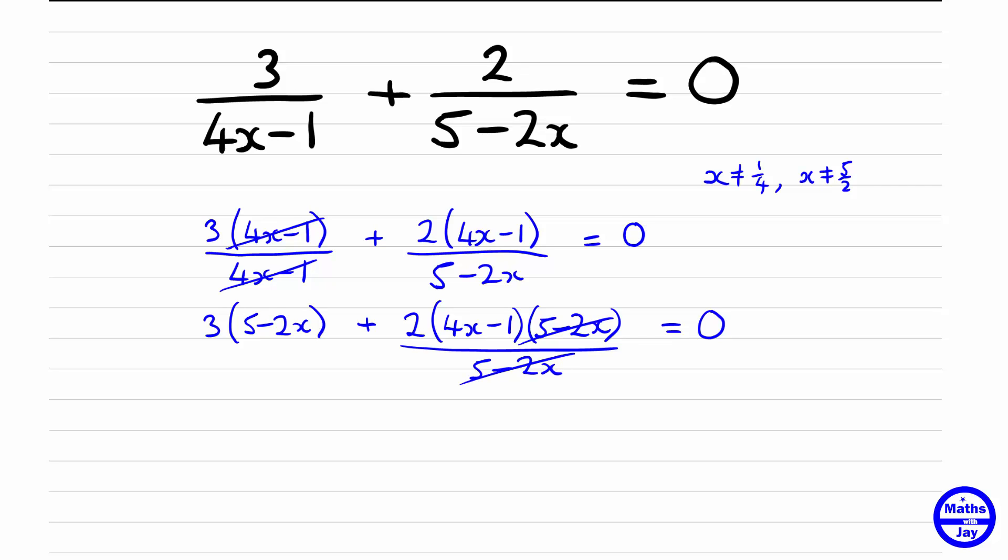So once you're used to doing questions like this all you would need to do is look at the first line, the line that you're given, and multiply both terms by 4x minus 1 and 5 minus 2x, and of course the right-hand side. So you could just to start with write down 3 times 5 minus 2x plus 2 times 4x minus 1. If you've got a number other than zero on the right-hand side you would also see 5 minus 2x multiplying 4x minus 1 there as well. And now you can see it's a relatively simple question to solve.